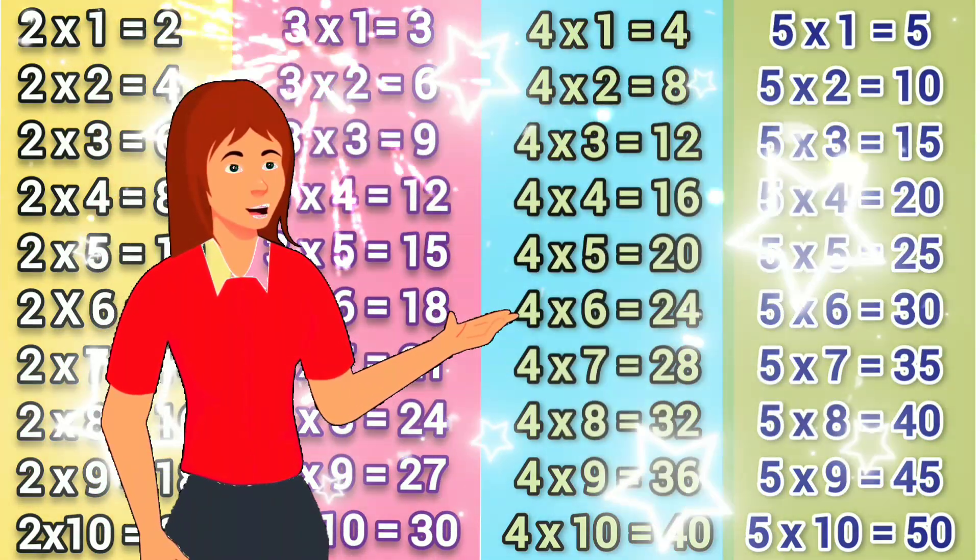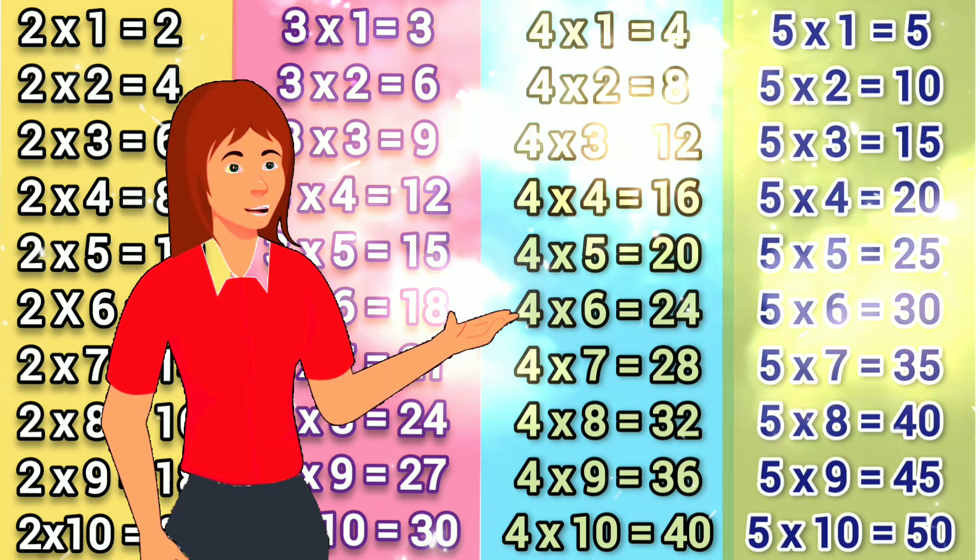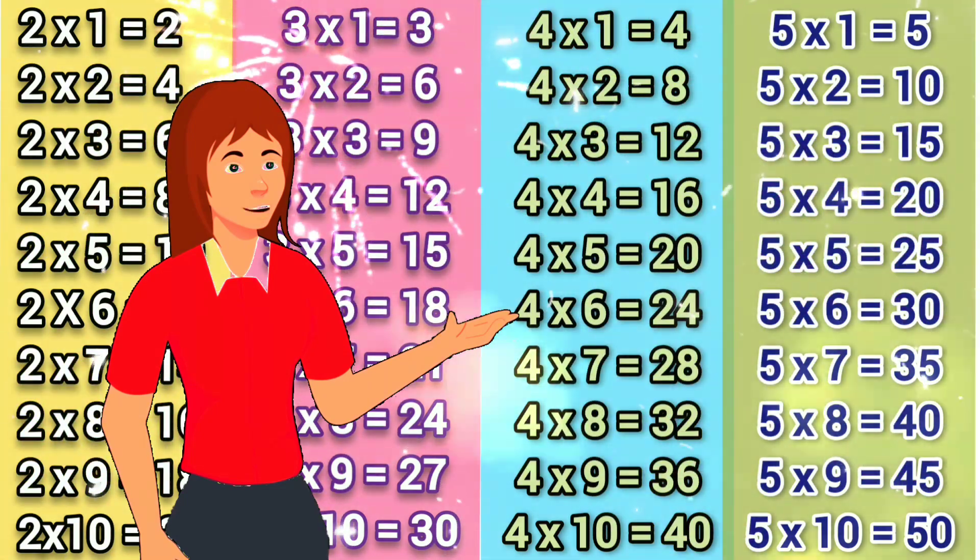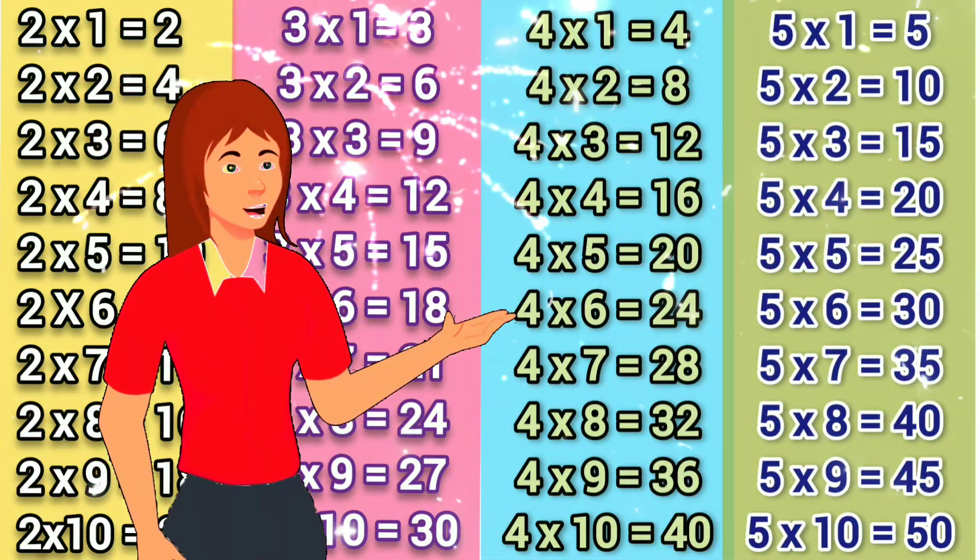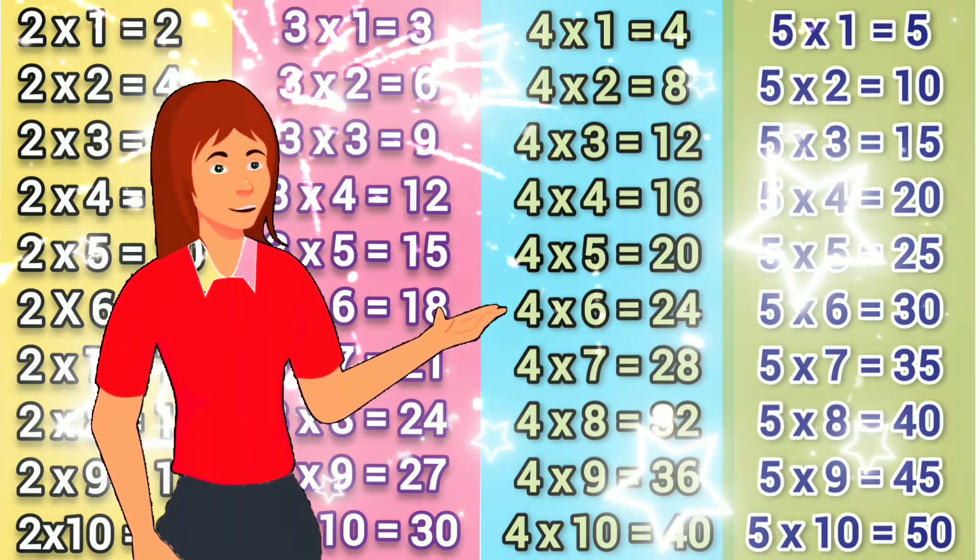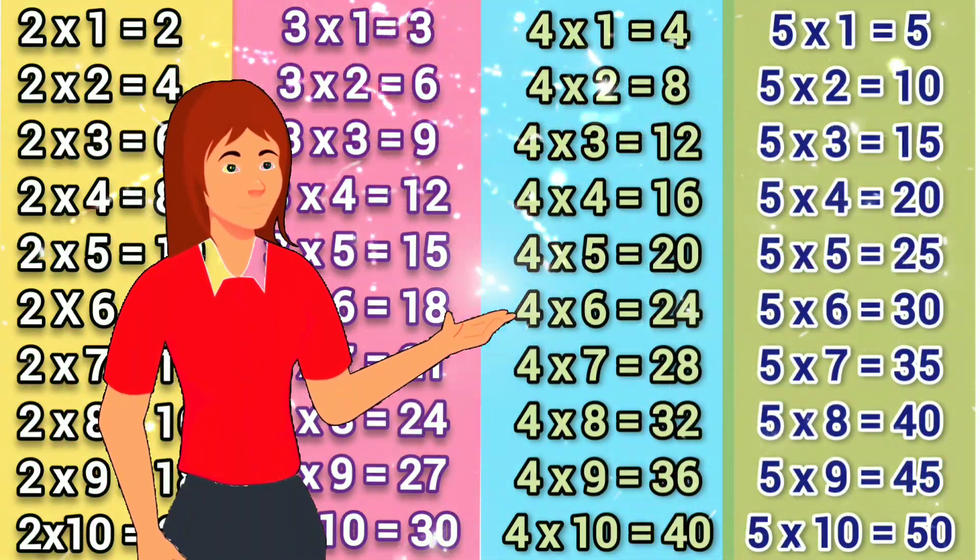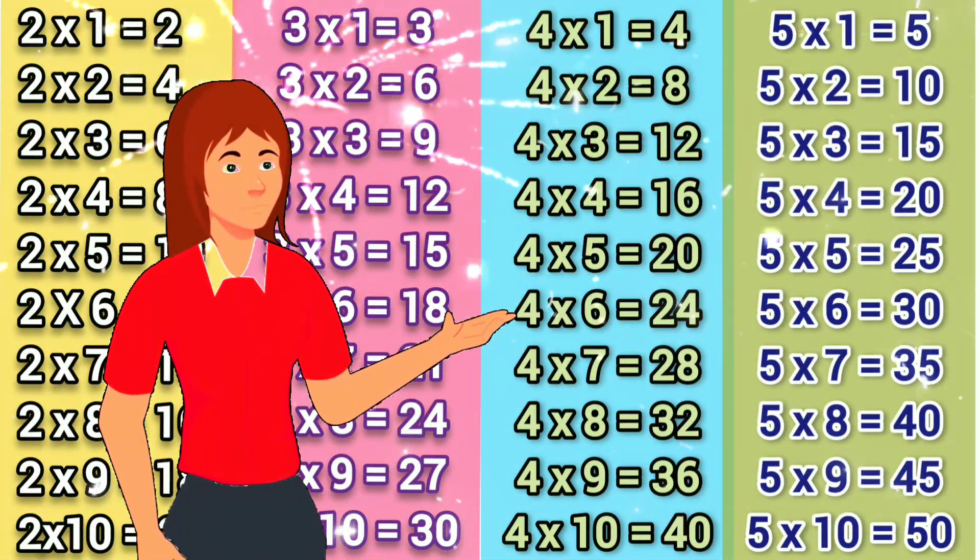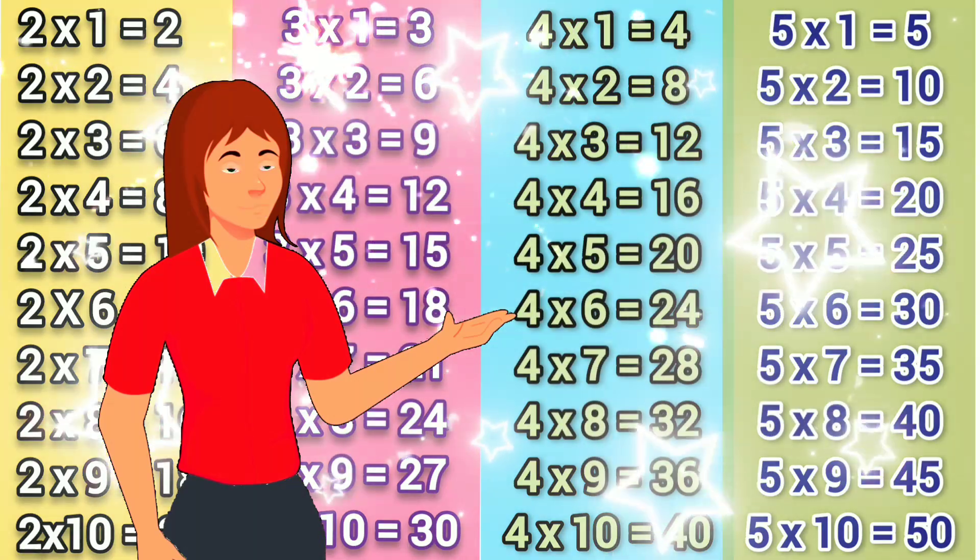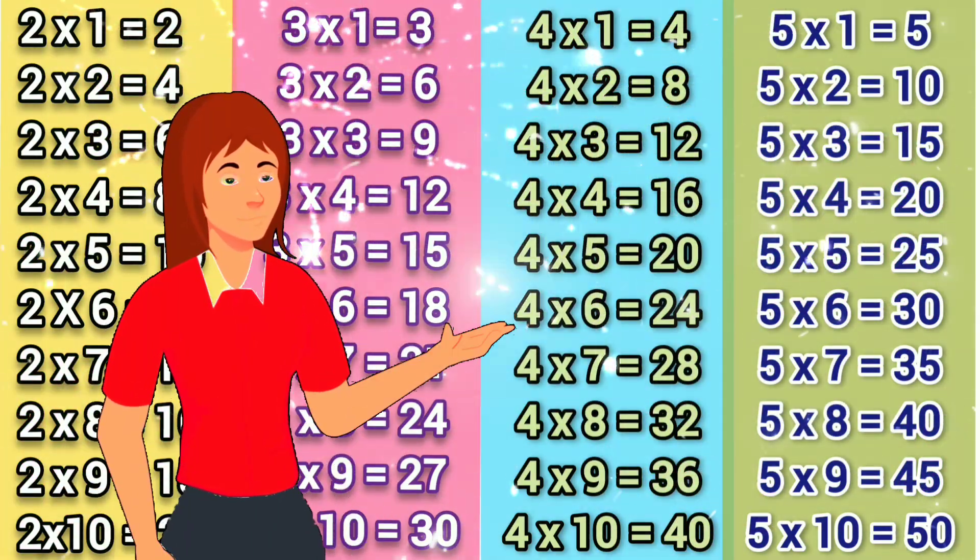5 6's are 30, 5 7's are 35, 5 8's are 40, 5 9's are 45, 5 10's are 50,